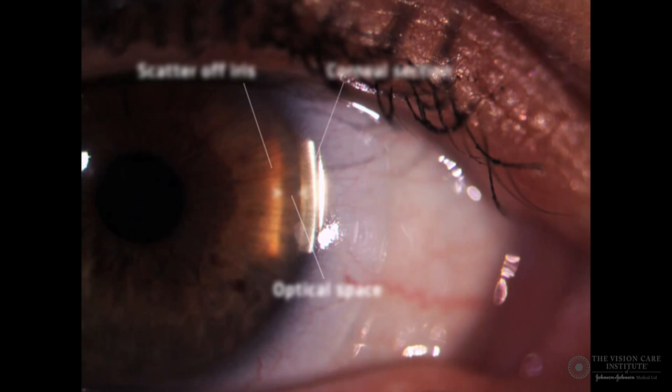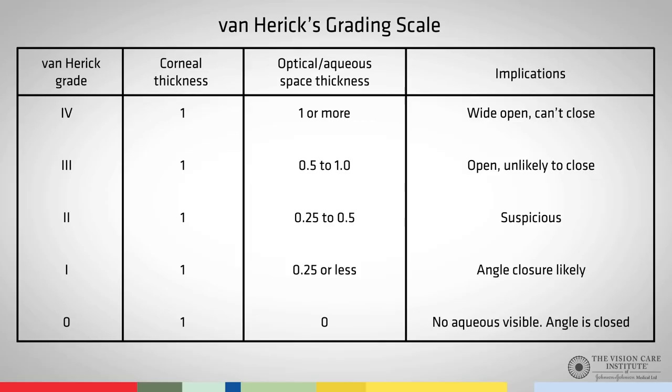Once we have this, we conduct the same assessment as we did previously, whereby the space between the endothelial part of the corneal section and the scatter off the iris is assessed. Then, just as with the temporal angle, we refer to the Van Herick grading scale.